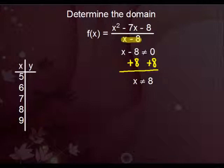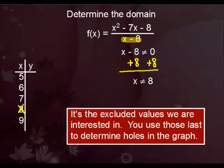So our domain is all real numbers except eight, which means you can plug in anything you like except we'd have to leave eight out of it. Getting the domain is key because whatever values are excluded from the domain are what we're going to use to help you determine the holes in the graph.